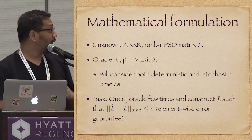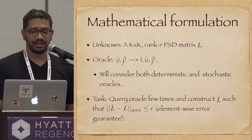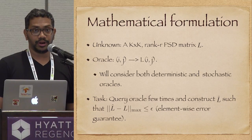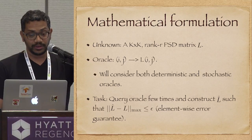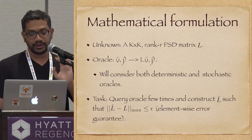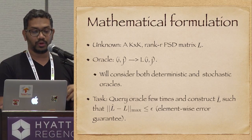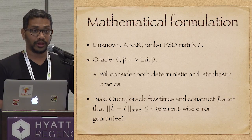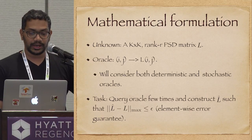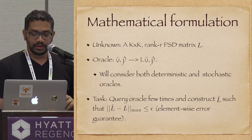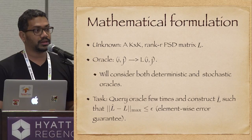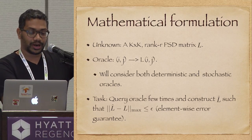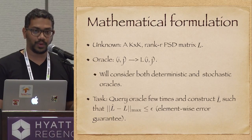Let me state it more formally. You have an unknown K by K rank-R PSD matrix L. We assume we know what R is for now. You have an oracle: when you query it with (i,j), it returns the value of matrix L at row i and column j. We consider both stochastic and deterministic oracles. The task is to query the oracle very few times and construct an estimate of L with epsilon error — that is, element-wise reconstruction error, which is an infinity-norm completion.